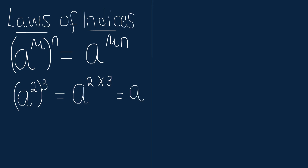Another example is A raised to power 1 half inside the bracket and raised to power 1 third outside the bracket. This will become A raised to power 1 half multiplied by 1 third, and the outcome is A raised to power 1 sixth.